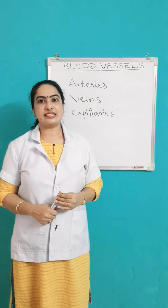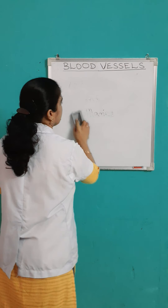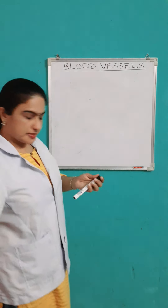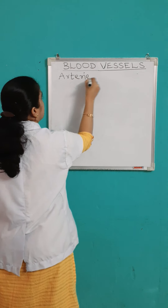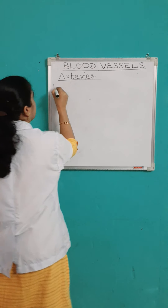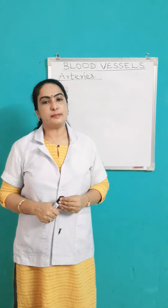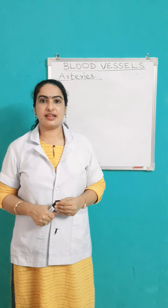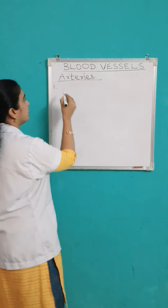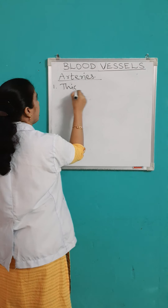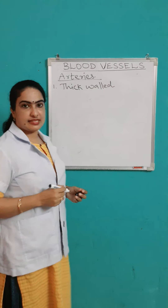Now we can see arteries in detail. First point: arteries are thick-walled blood vessels. That means the blood vessels with thick muscular walls are there in case of arteries. So these are thick-walled blood vessels — that is the first point.